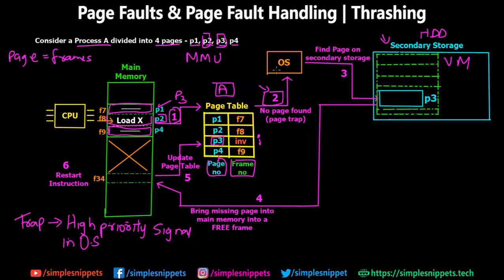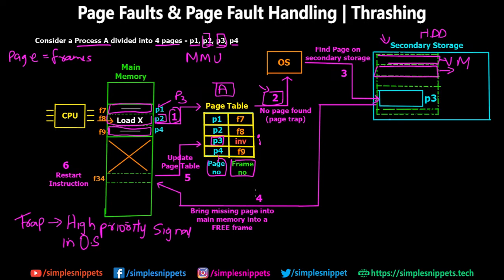Now the OS has to find the page on the secondary storage which is used as virtual memory. Using this paging scheme, we have used some portion of the secondary storage as virtual memory and divided it into pages. Somewhere on this virtual memory we have P3, so the operating system goes to secondary storage and finds P3.